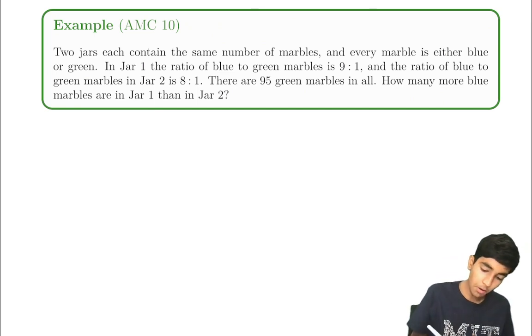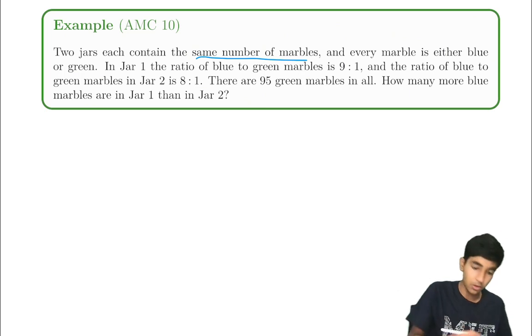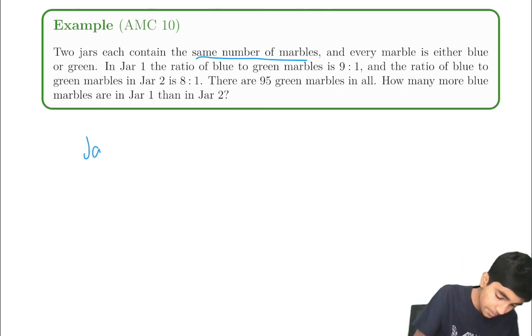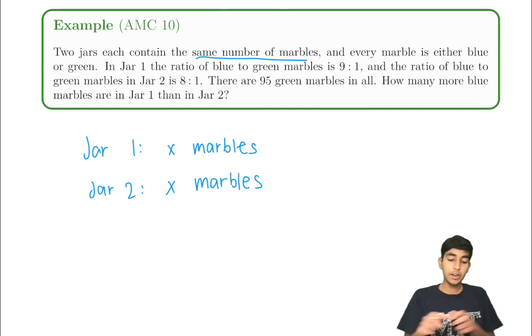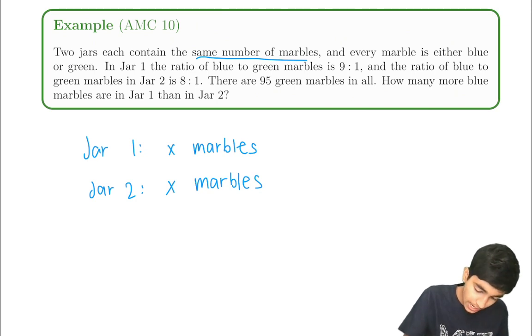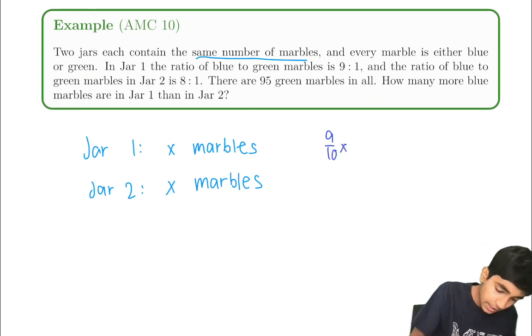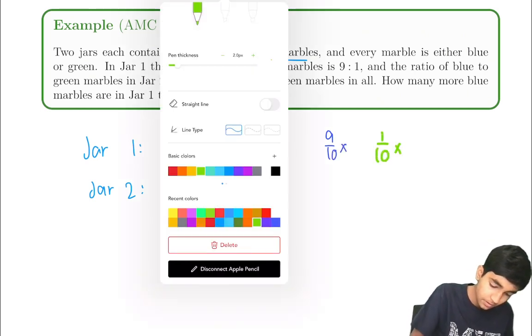So they both have the same number of marbles. Let's say x marbles. Jar one x marbles. Jar two also x marbles because they have the same number. So jar one ratio blue to green is nine to one. So blue is nine tenths x, green is one tenths x.